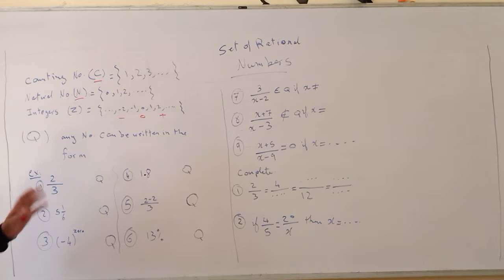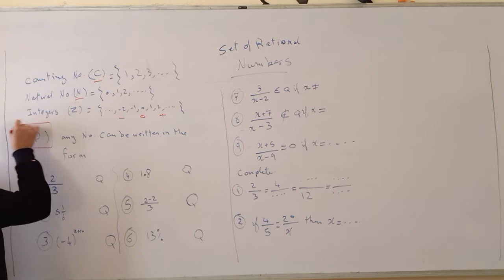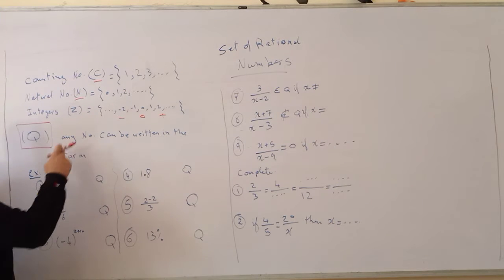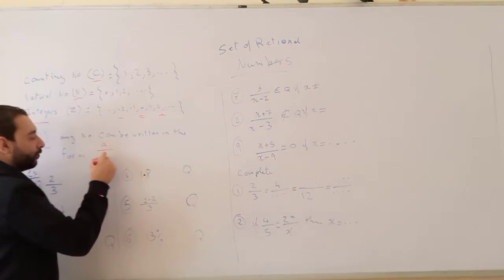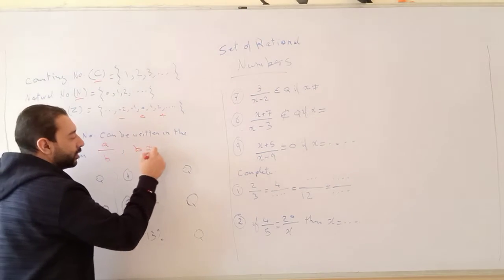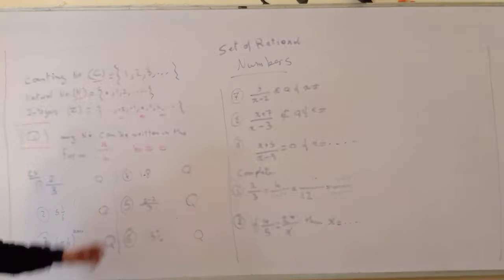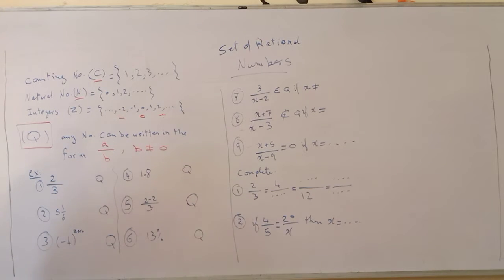Today we are going to study the set of rational numbers, denoted by the letter Q. What do we mean by a rational number? A rational number is any number that can be written in the form A over B, where B is not equal to 0. The denominator cannot be equal to 0.